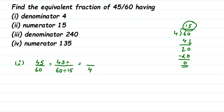So we divide the same number — 15 — in the numerator as well. 45 divided by 15: since 15 times 3 is 45, the answer is 3. So we get 3 in the numerator. Therefore, 3 by 4 is the equivalent fraction where the denominator is equal to 4.